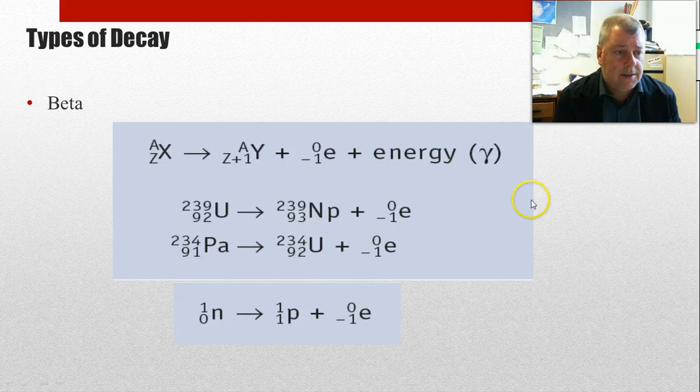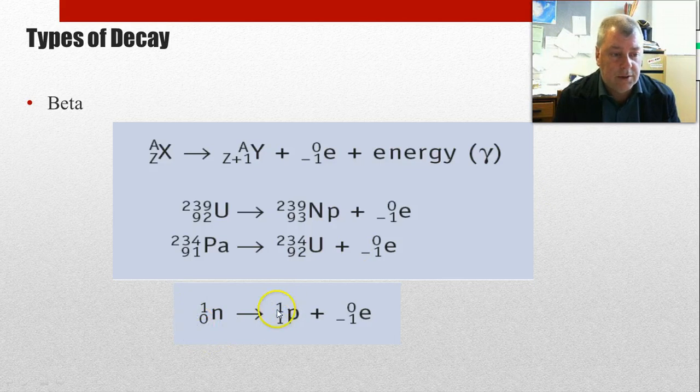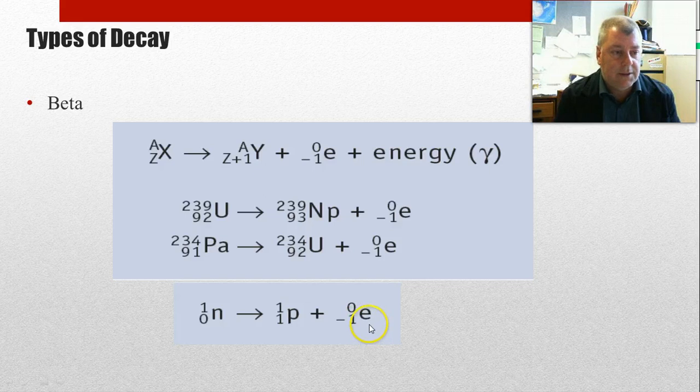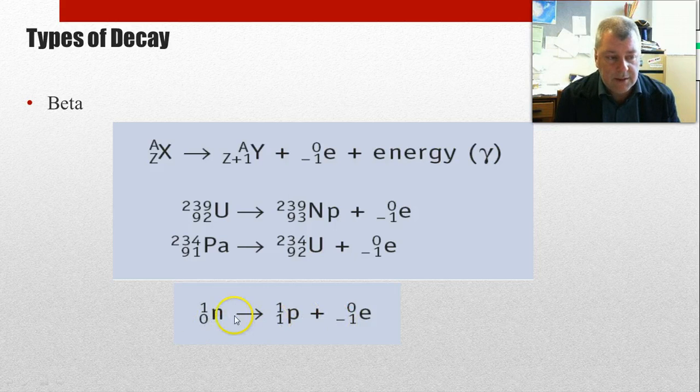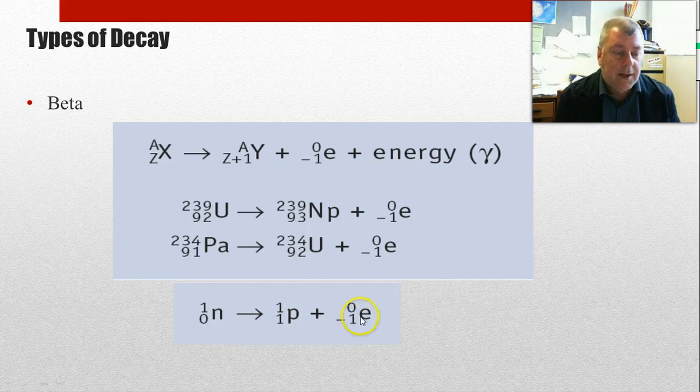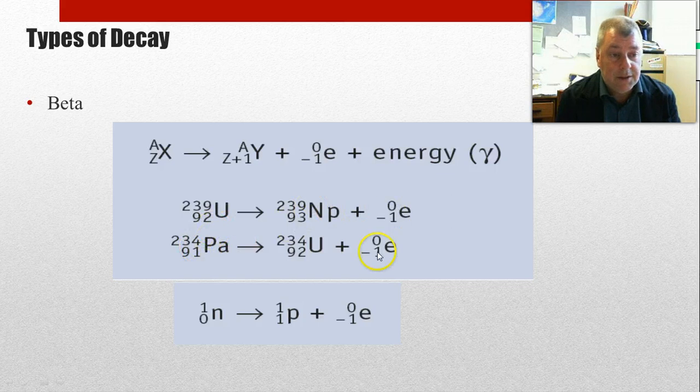Beta decay. Now this is the more complicated one that we did. And this is when a neutron, within the nucleus, transforms itself into a proton and an electron, and the electron gets kicked out of the nucleus. And we put this little minus one here because we need to make sure that the bottom numbers balance. And if we have zero for a neutron here, because there's no protons in a neutron, and we have one here, we need a minus one there. And here's two examples of uranium and polonium undergoing beta decay.